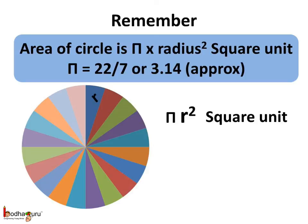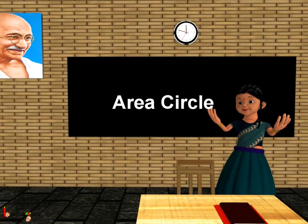So, now you know what is the area of a circle of a given radius. That's all for now. Bye-bye children.